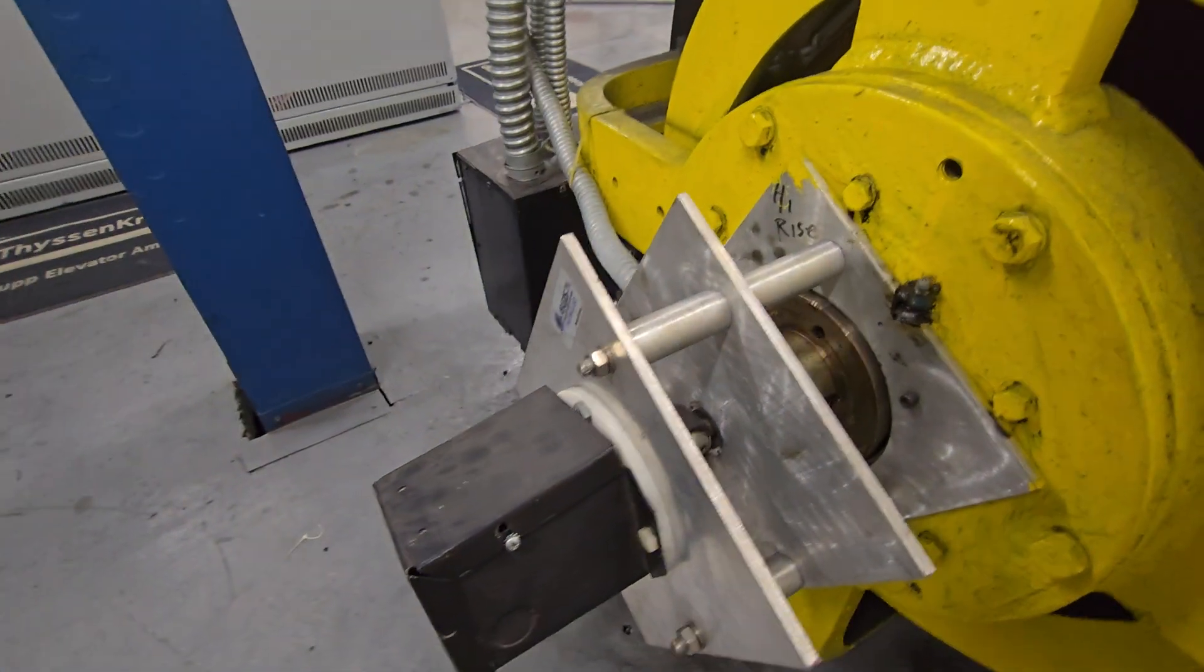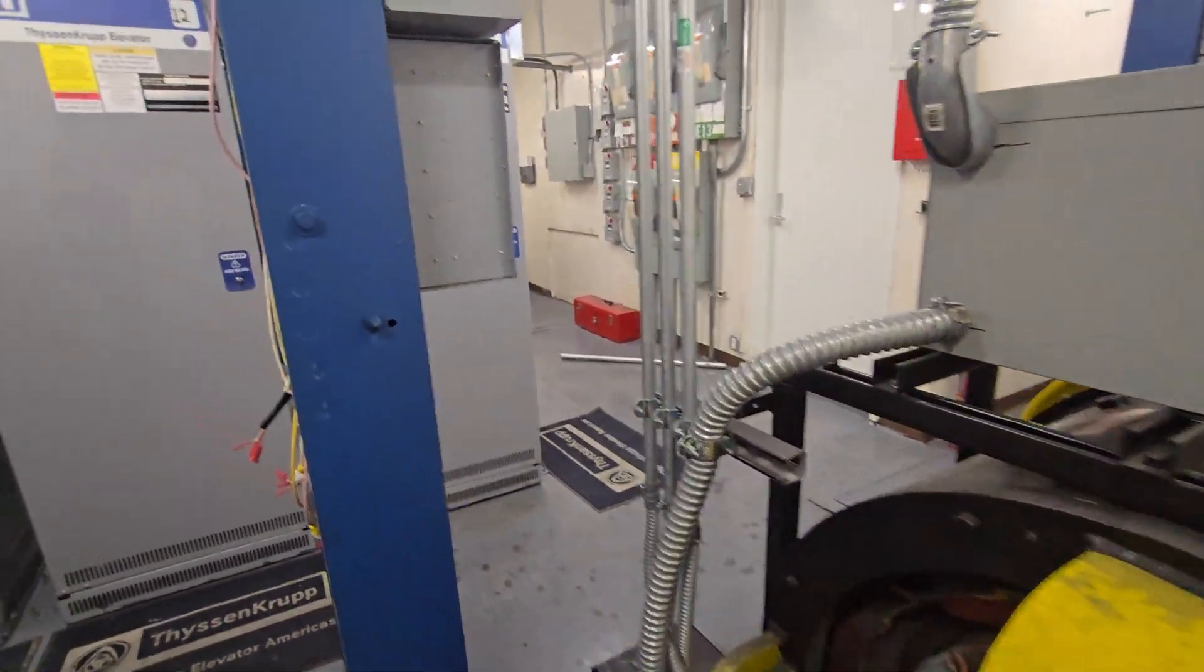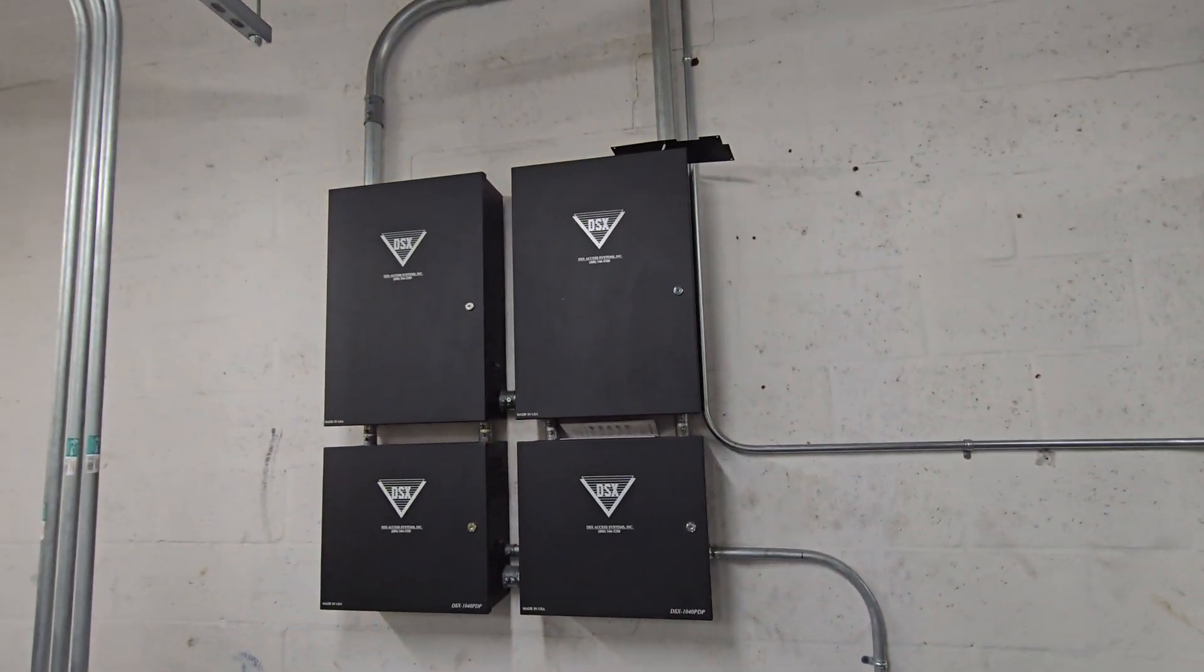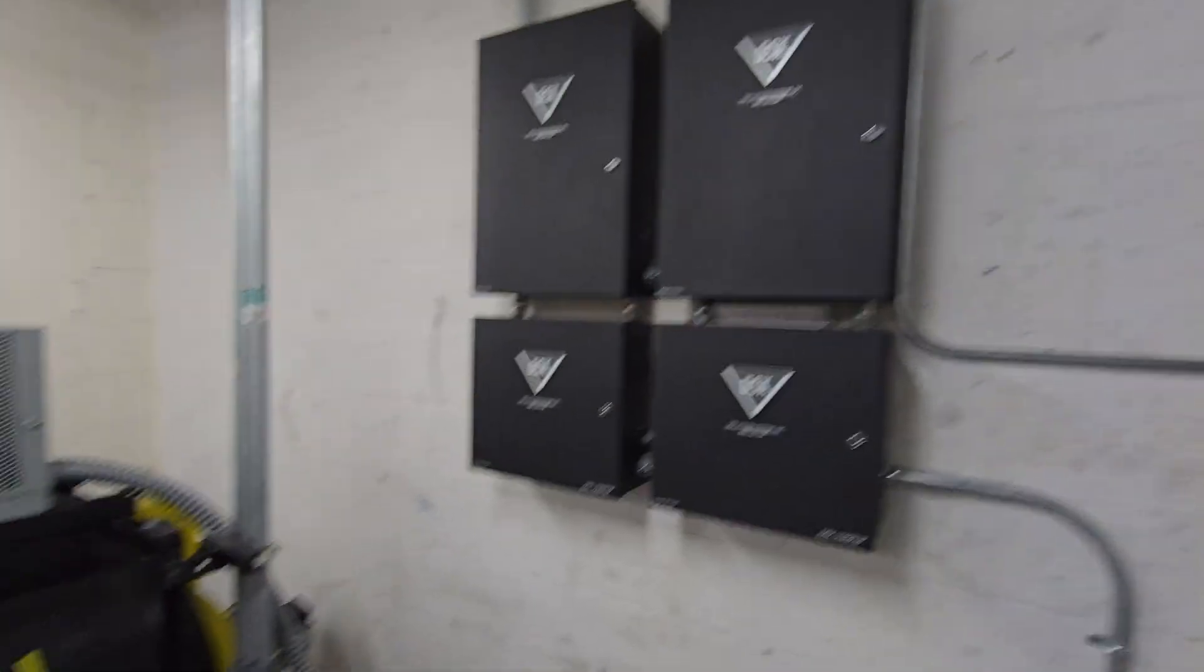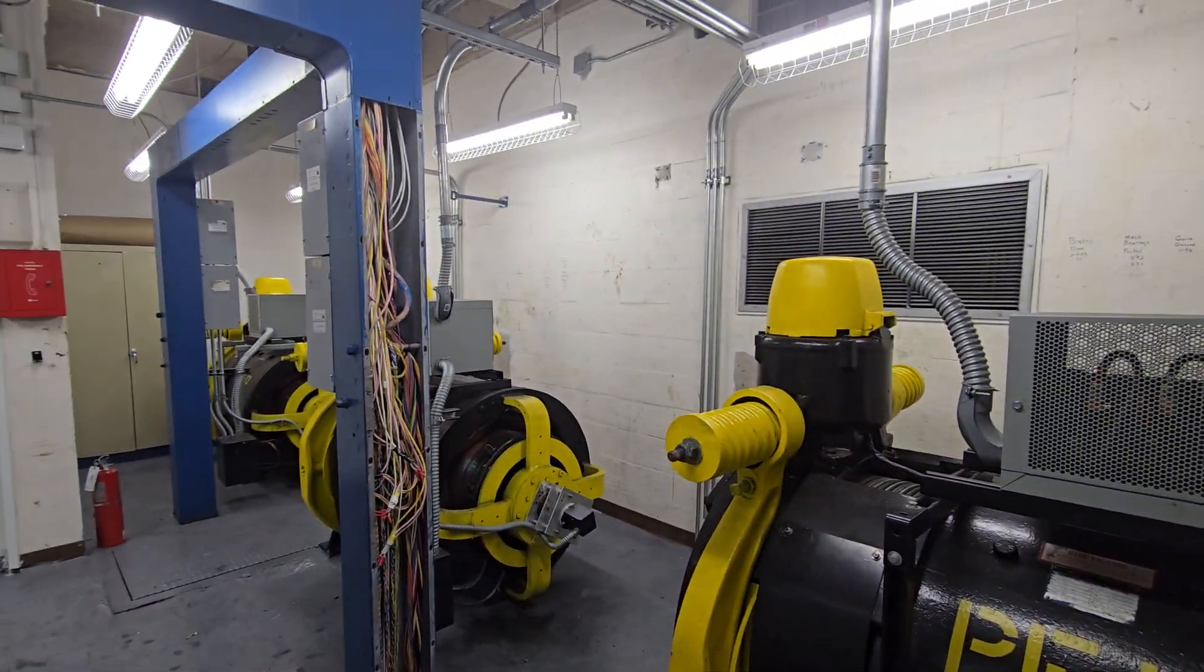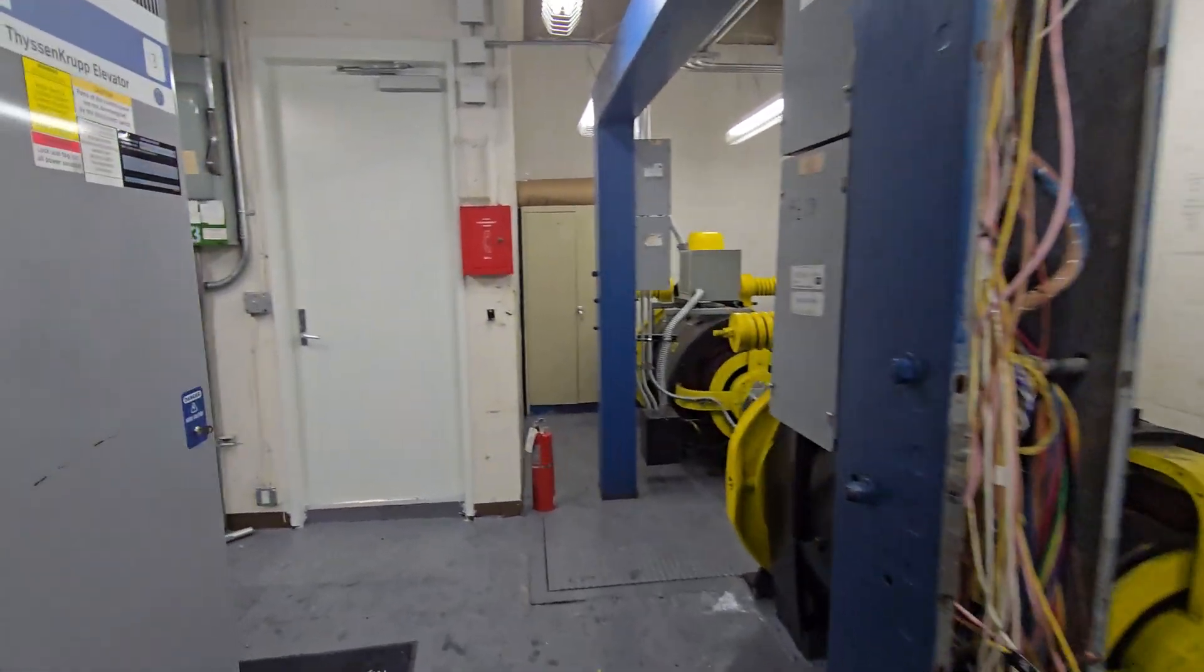This is a tachometer. This is used to track the speed. Here are your connection boxes. This is your keycard controllers. So these control the keycards in the elevators. Certain floors are locked off, certain floors aren't. These are what control those.